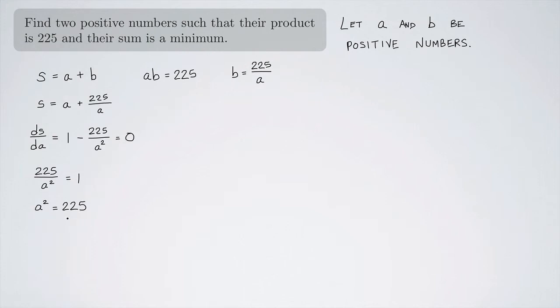And now I can square root both sides. And I see that A could be plus 15 or A could be minus 15, negative 15. But up here I said A and B are going to be positive numbers. So I'm going to let A be the positive 15.